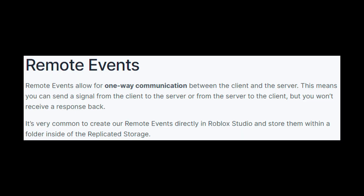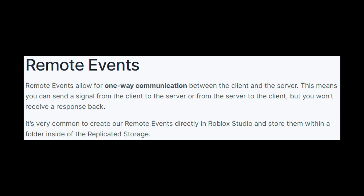Now that we have a general understanding of the client-server model, let's talk about how these two can communicate with each other. First, we'll start off with remote events. Remote events allow for one-way communication between the client and the server. This means you can send a signal from the client to the server, or from the server to the client, but you will not receive a response back. Generally, when we create remote events, we create a folder inside of the replicated storage, usually called remotes, and then we create all the remote event objects we're going to need and store them inside of that folder.